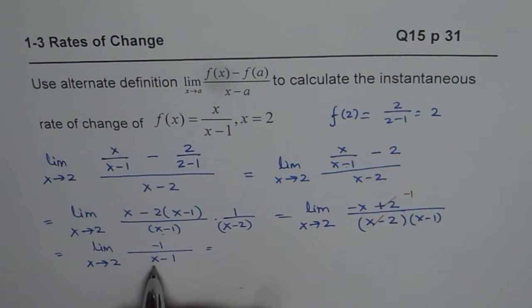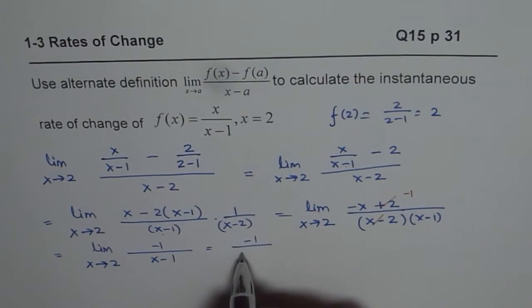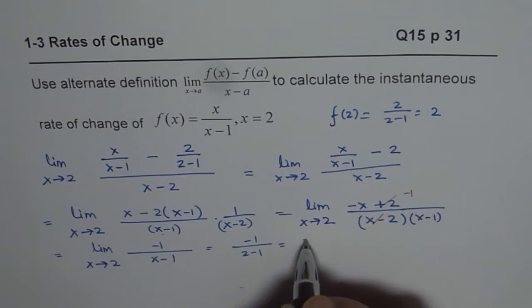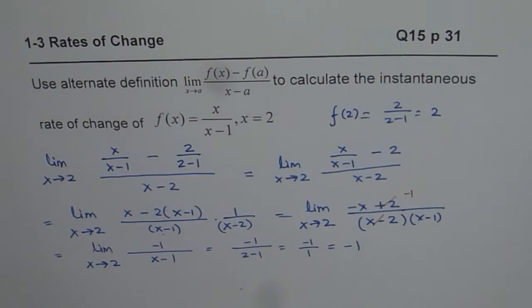Substituting 2 for x, we get minus 1 over 2 minus 1, that is minus 1 over 1 and so the answer is minus 1. So, that is the limit for the function as x approaches 2. I hope that helps. Thank you.